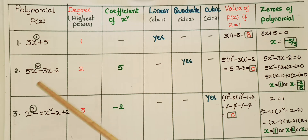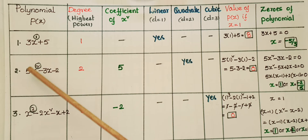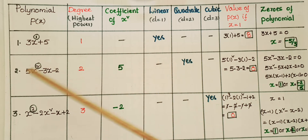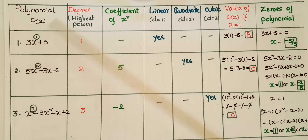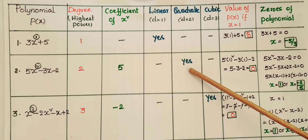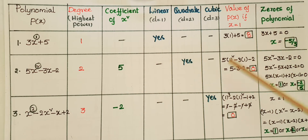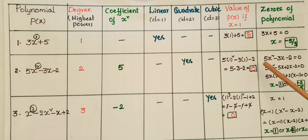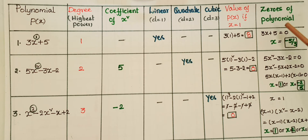The next example is 5x square minus 3x minus 2. Here the variable is x and the highest power is 2, so the degree is 2 and the coefficient of x square is 5. It is a quadratic polynomial. The value of the polynomial if x is equal to 1: 5 into 1 square minus 3 into 1 minus 2 is equal to 0.